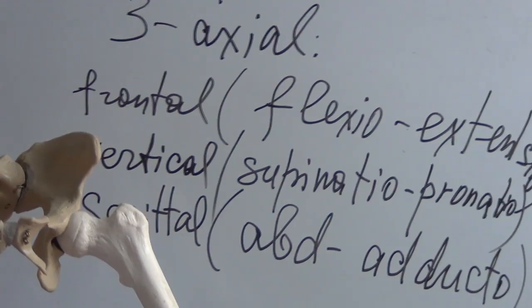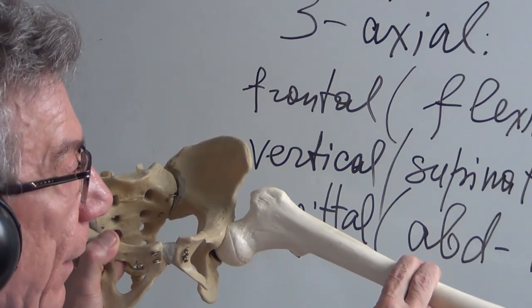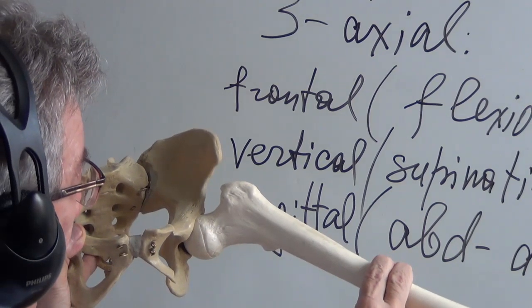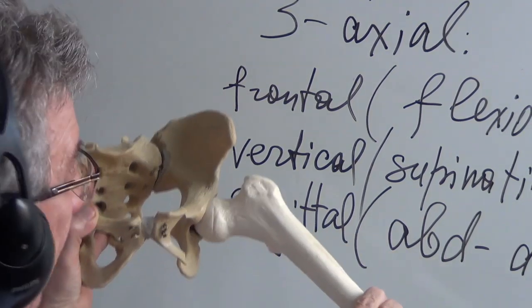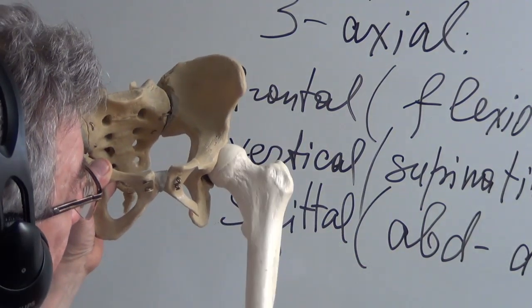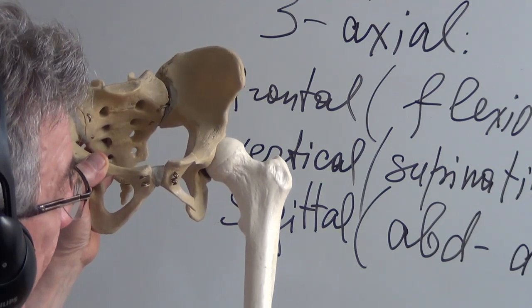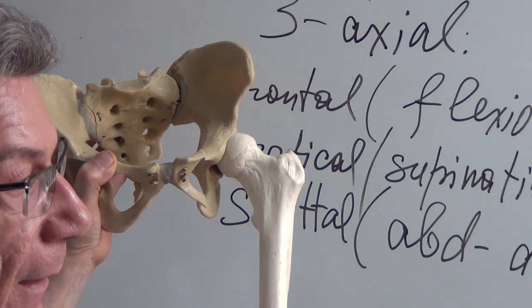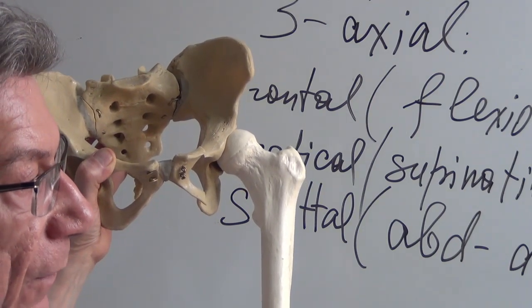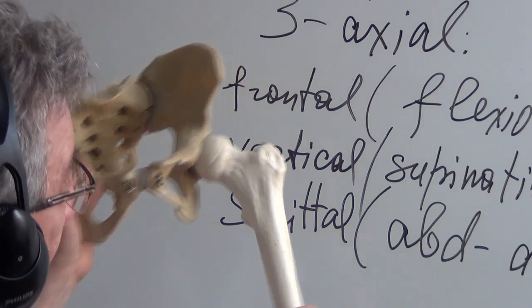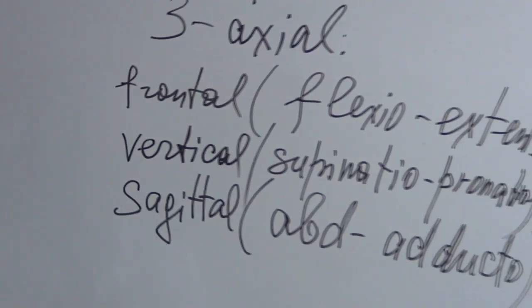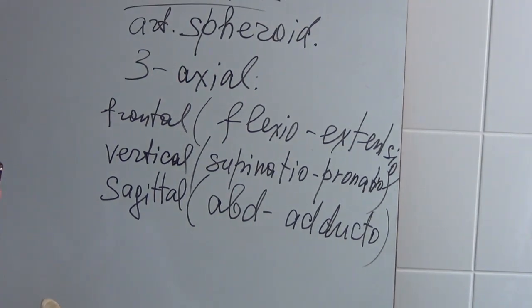Abductio is movement in opposite side from the midline and adductio is in the direction of the midline, of the sagittal plane. So three different axes and six movements.